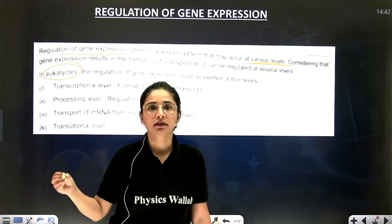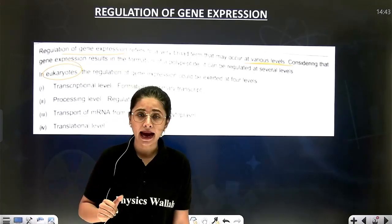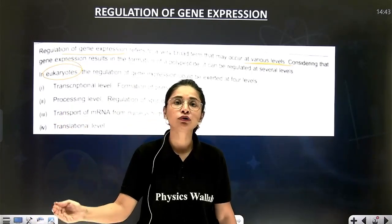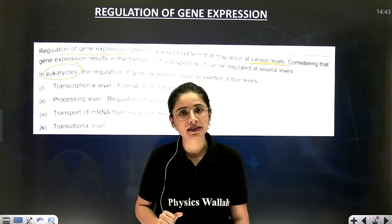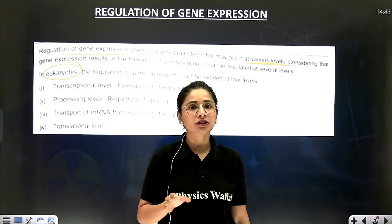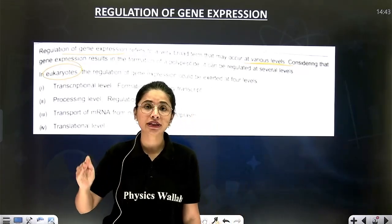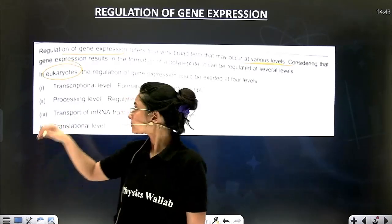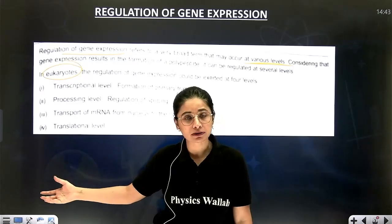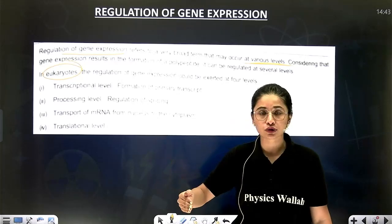If splicing won't take place, then automatically the heterogeneous RNA, even if it is produced in the nucleus, cannot be utilized for protein synthesis, and you will be successful in regulating gene expression. Third, suppose splicing also happened — then don't let that homogeneous RNA move out of the nucleus and into the cytoplasm. Till the compartment doesn't change from nucleus to cytoplasm, translation cannot take place. So this is the third place where regulation of gene expression can be done. Number two is at the processing level — don't allow splicing. Number three is don't let the compartment change from nucleus to cytoplasm.